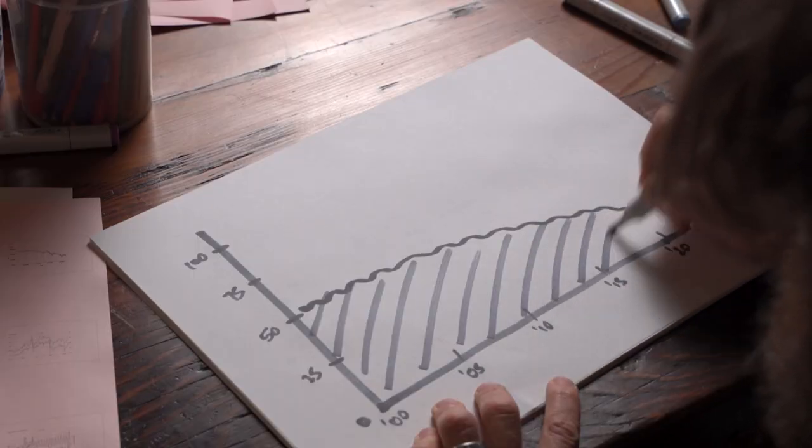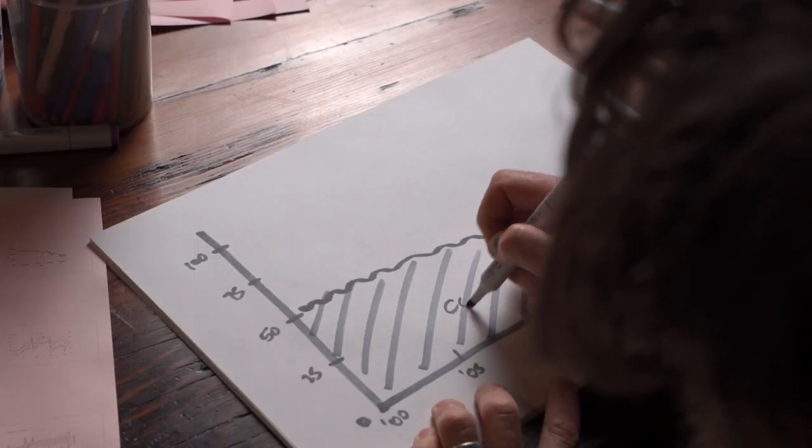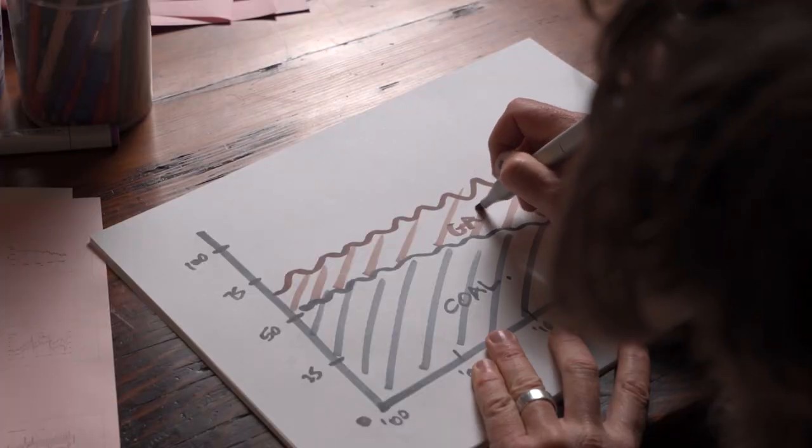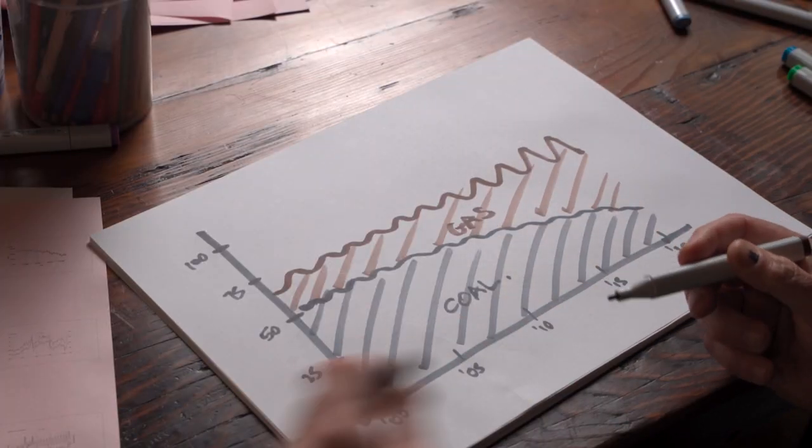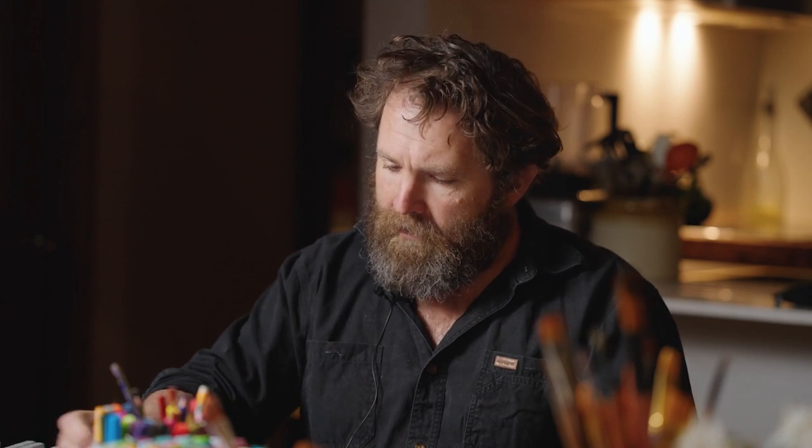You can already see it not just residentially, but on the grid as a whole. You can see coal on the way out here at the bottom. You can see gas has largely replaced it, but it's starting to slow down at that effort. Nuclear is fading out. Hydro is consistent, but again, since about 2010,